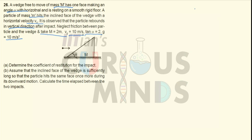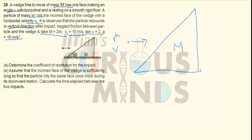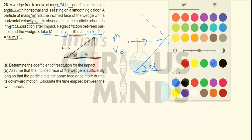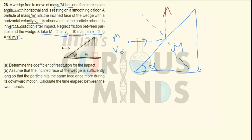Let me elaborate the diagram. This is a wedge of mass capital M. A particle of mass small m is approaching the wedge with velocity V0. After the impact, it collides on the inclined face — this angle is alpha. After the impact, the particle moves in the vertical direction with velocity V1, and capital M will obviously move in the right-hand direction with velocity V2. We need to calculate the coefficient of restitution.